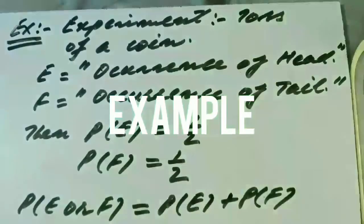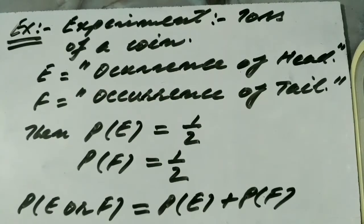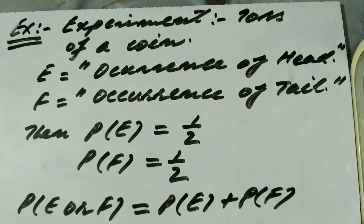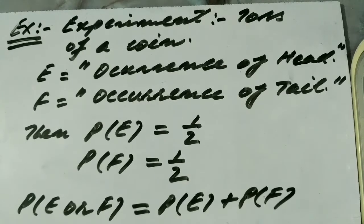Let us take an example. Suppose the experiment is a toss of a coin, and E is defined as the occurrence of head and F is defined as the occurrence of tail. As we know, the possible outcomes of one toss are only two: head and tail. Because head and tail may not happen at the same time, the occurrence of head and the occurrence of tail are two mutually exclusive events.